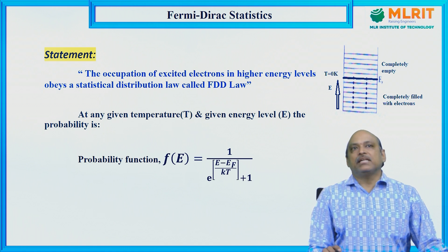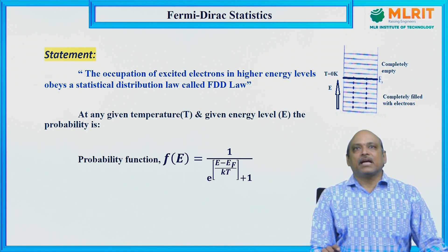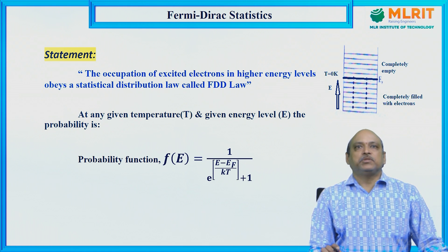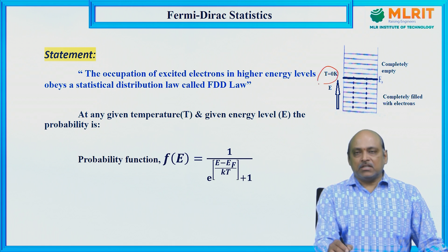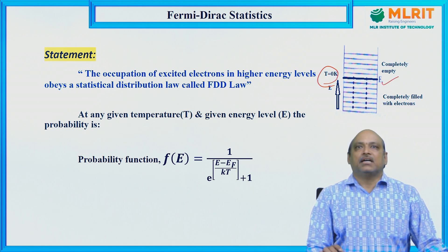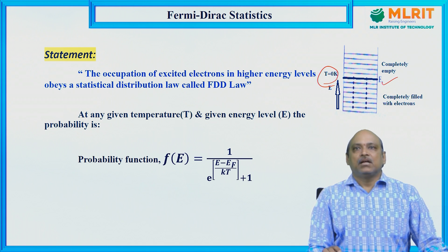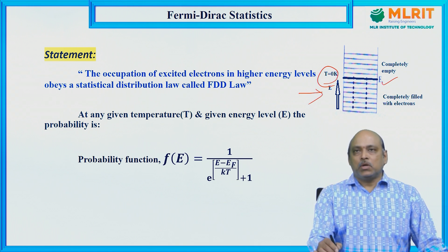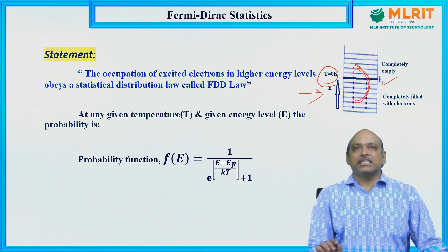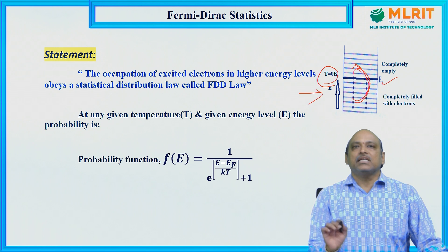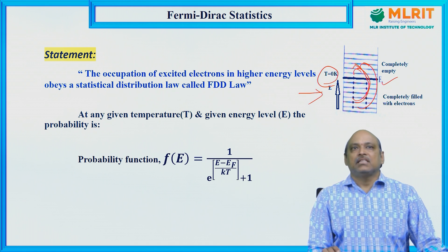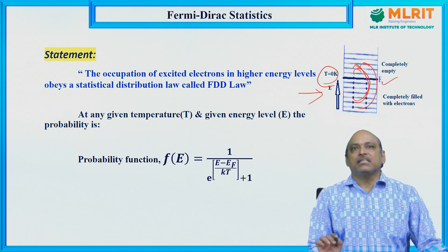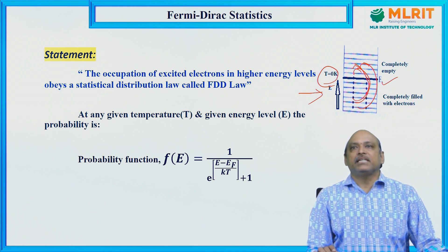Now, according to the definition of Fermi Dirac Distribution Law (FDD): at a temperature of 0 degree Kelvin, the highest energy level occupied by electrons is called the Fermi energy level. When you raise the temperature of the material, electrons get excited and jump from lower energy levels to higher energy levels. This excitation of electrons obeys a statistical distribution law, which we call the Fermi Dirac Distribution Law.